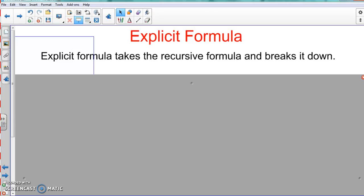So recursive was the whole thing with a₁ plus (n-1) times d. Explicit formula just takes that—as you can see the definition, explicit formula takes the recursive formula and breaks it down.